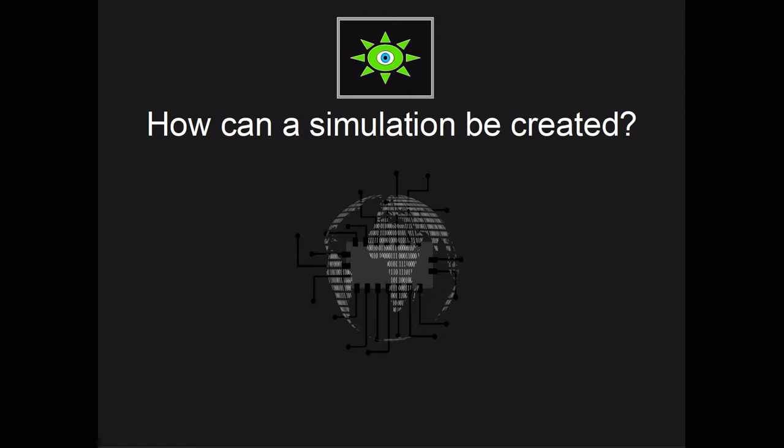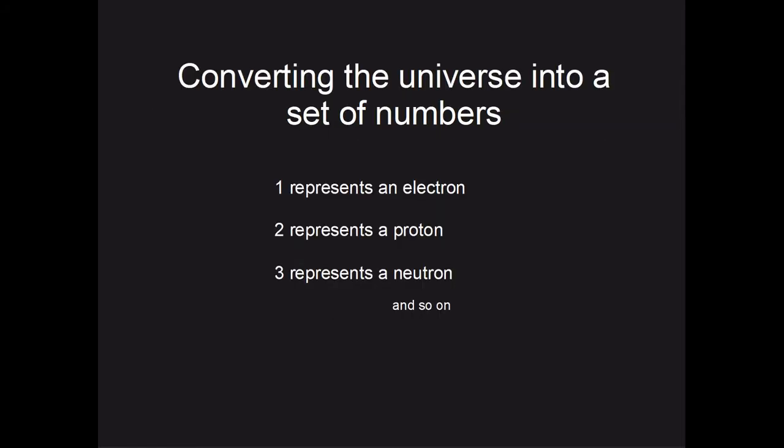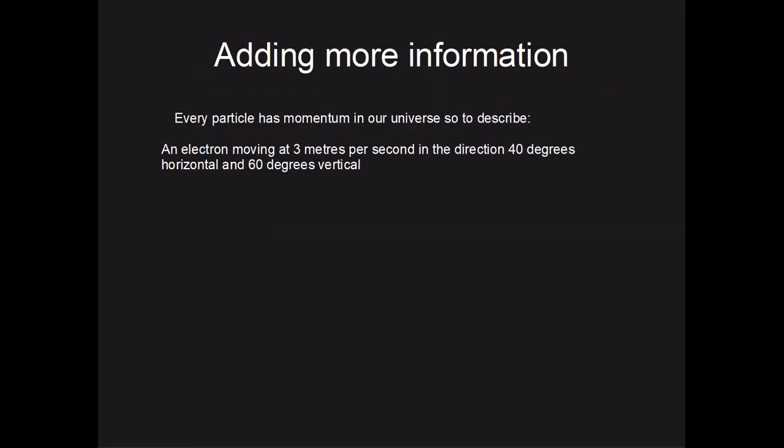First we need to figure out how a simulation can be created within a given universe. A universe at a certain point in time can effectively be represented by a set of numbers. For example, we could assign the value 1 to an electron, 2 to a proton, and 3 to a neutron. Every particle has momentum, so we can attach the momentum to our particle numbers, making up an array for each particle.